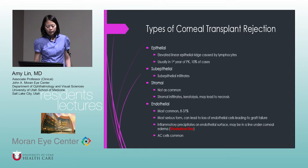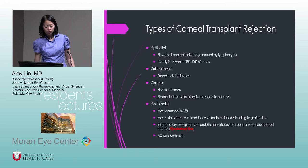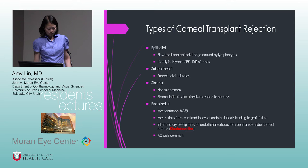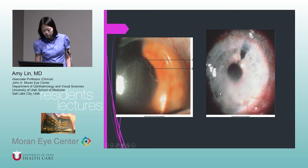There are a few types of corneal transplant rejection. Epithelial rejection: an elevated epithelial ridge caused by lymphocytes, usually in the first year after PK, and uncommon. Sub-epithelial: sub-epithelial infiltrates. Stromal rejection: not as common, involves stromal infiltrates and thinning that may need debridement. Endothelial rejection is the most common and most serious, as it can lead to loss of endothelial cells, chronic corneal edema, and graft failure. The buzzword is the Khodadoust line — inflammatory precipitates on the endothelial surface — which may appear in a line under corneal edema, with anterior chamber cell being common.